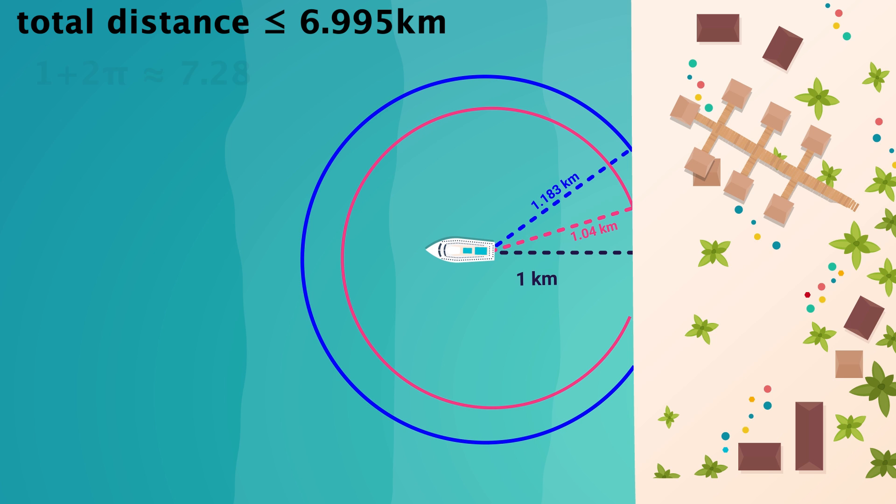And compared to the 1 plus 2 pi, or roughly 7.28 kilometers, you're saving just over a quarter of a kilometer in the worst case scenario. So, there you go. That's the solution.